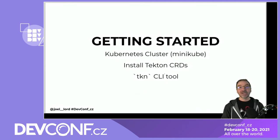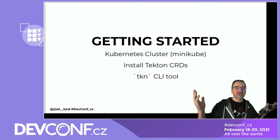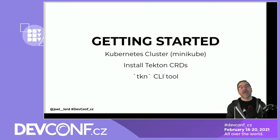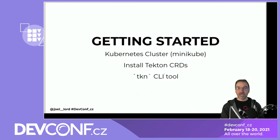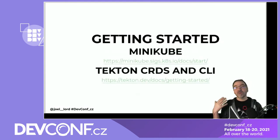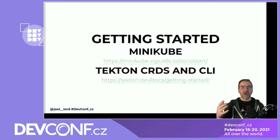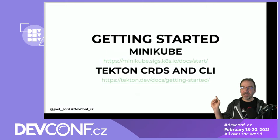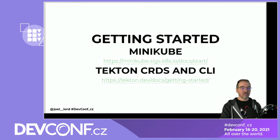Then you need to install the Tekton CRDs — it's a relatively simple, painless process. There is one command you can copy from the documentation that installs everything for you. We'll also use the TKN CLI tool. Technically you don't need it, but it makes it a lot easier to manage your Tekton pipelines. You can find Minikube and the Tekton CRDs and CLI in the Getting Started Guide at tekton.dev.